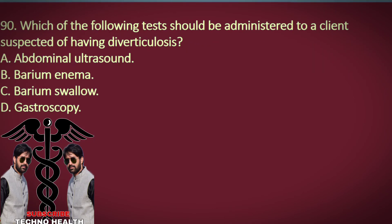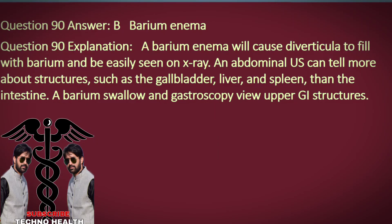Question 90. Which of the following tests should be administered to a client suspected of having diverticulosis? A. Abdominal ultrasound. B. Barium enema. C. Barium swallow. D. Gastroscopy. Answer: B. Barium enema. Explanation: A barium enema will cause diverticula to fill with barium and be easily seen on x-ray. An abdominal ultrasound can tell more about structures such as the gallbladder, liver, and spleen, than the intestine. A barium swallow and gastroscopy view upper GI structures.